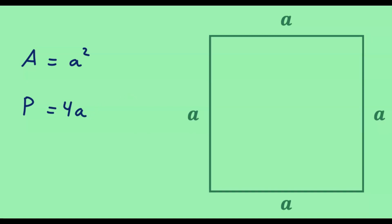So this means that if we want to determine the area of the square — that is, if we want to determine the space covered by the square — then what we need to do is take the square of the length of the side.